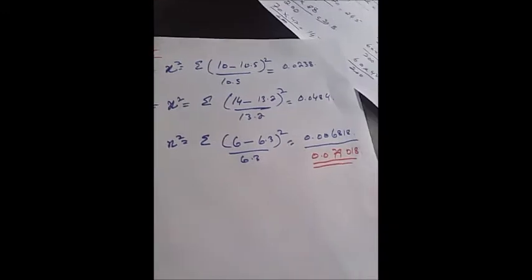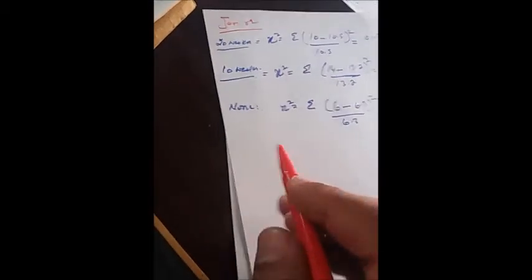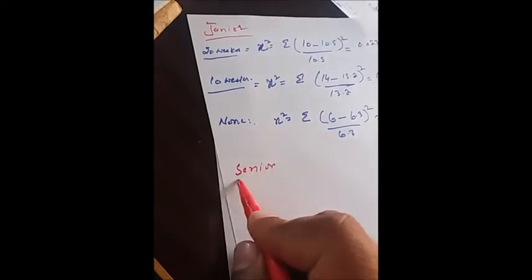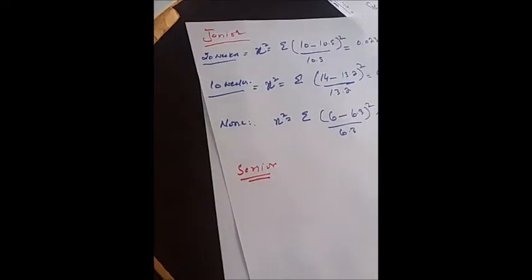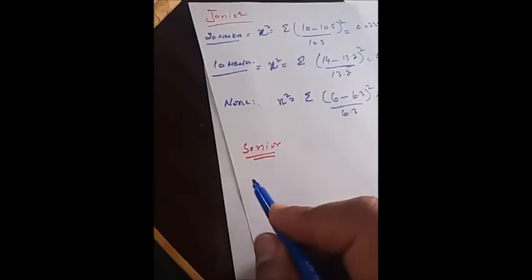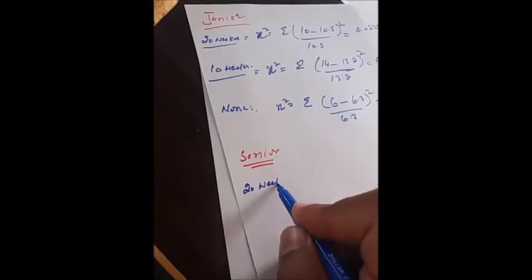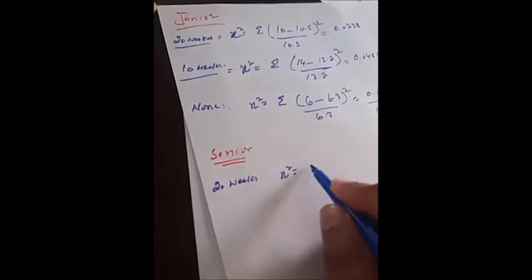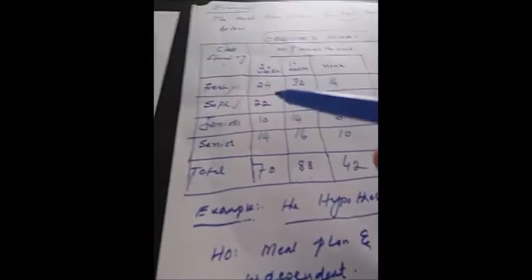This is the subtotal for juniors. Now with the same type, for the last category — seniors. For seniors over 20 weeks, chi-square is the summation.